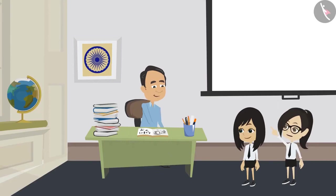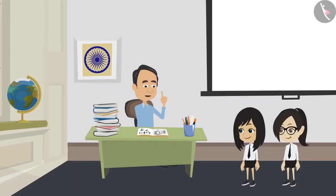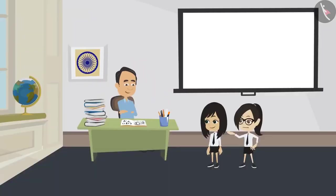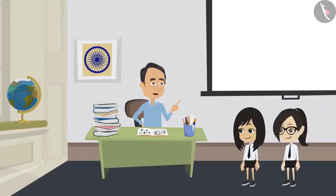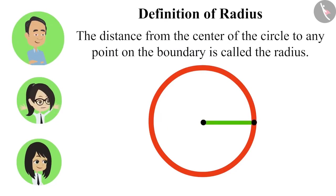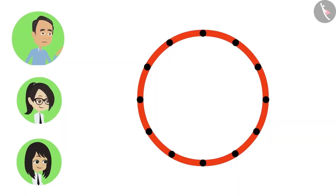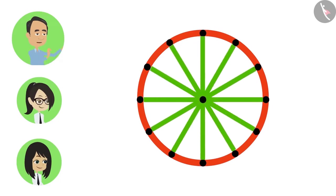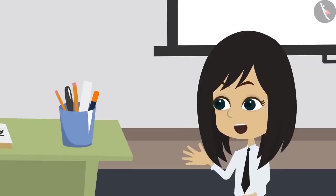Sir, why are there so many radius in the circle on the wall behind you? Oh, this is the Ashok Chakra. You are right that it is in the shape of a circle and there are many lines joining the center to the boundary, so they can be called radii. A circle can have only one radius — no, you got it wrong. Radius is the distance from the center to any point on the boundary. There can be many points on a circle, and lines can be drawn from the center to all those points — all these lines are called radius. So there can be several radii in one circle, like in the Ashok Chakra and in the wheel of our bicycle.